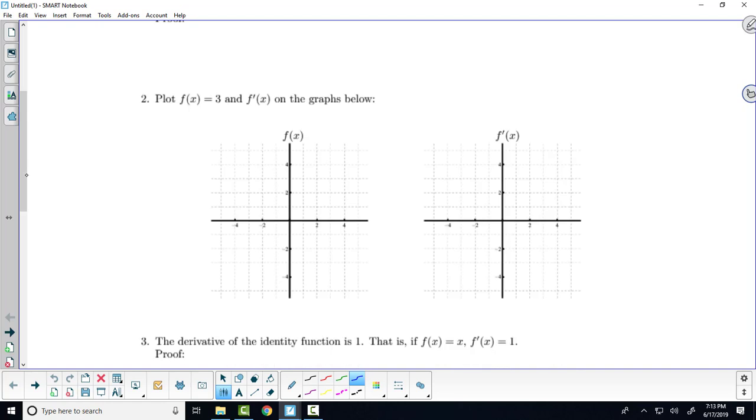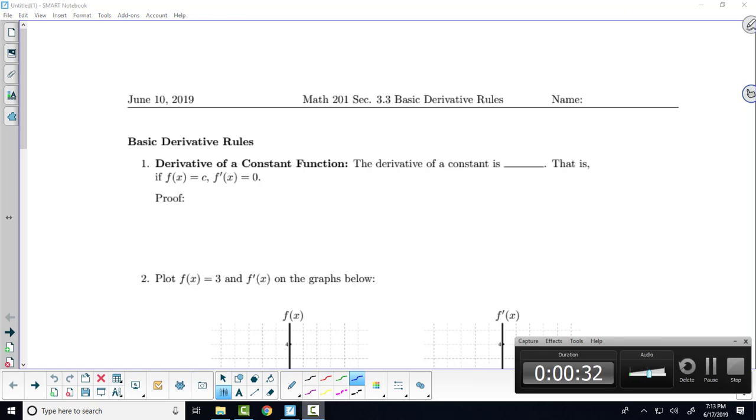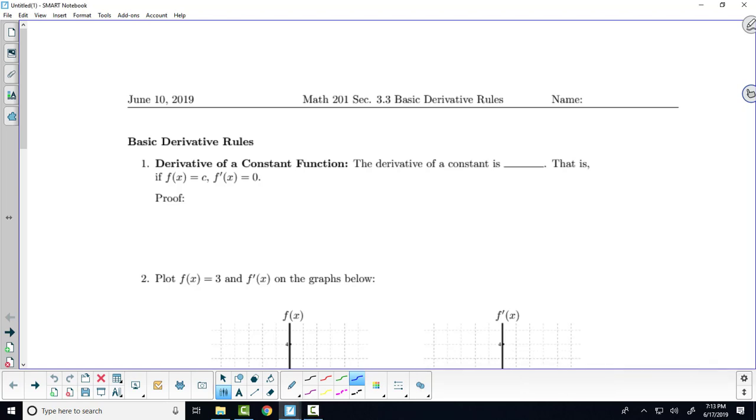The first one that we want to talk about is how do we take the derivative of a constant. There's two ways to look at this problem. One is you could look at the graph of a constant function, and we'll do that in just a second. You could look at the graph of a constant function and say, what is the slope of the tangent line anywhere along this constant function?